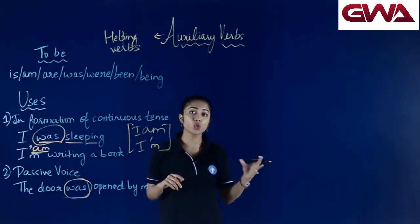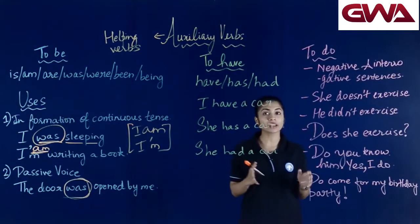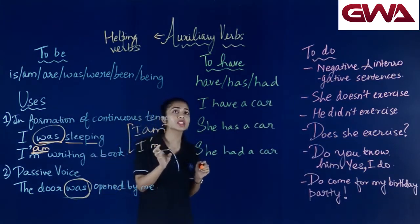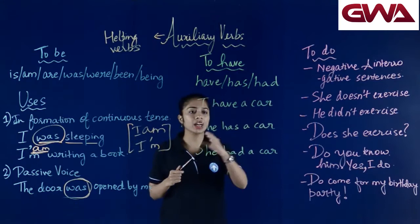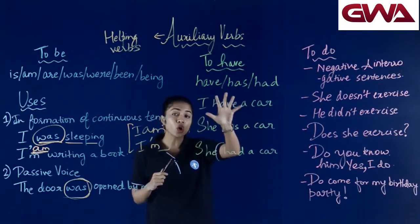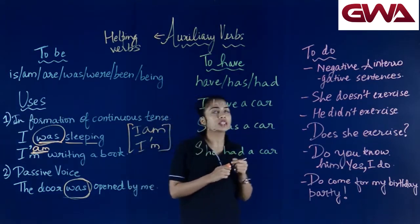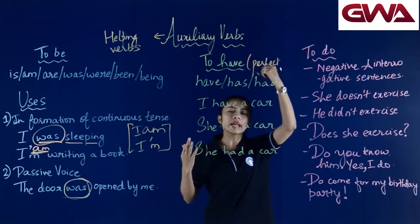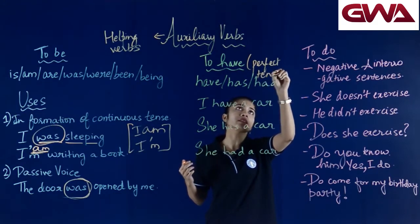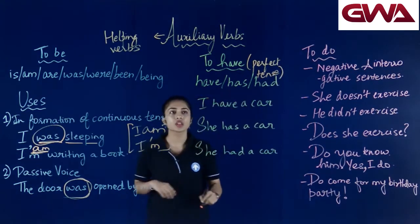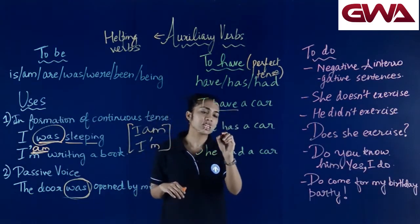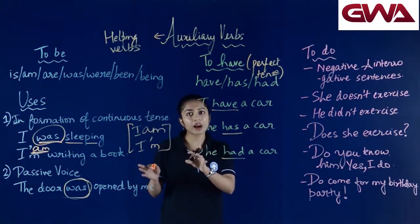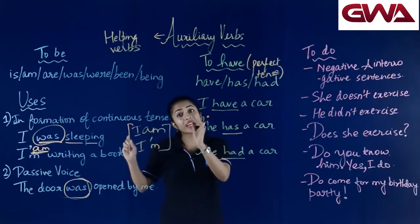आइए पढ़ते हैं to have और to do auxiliary verbs के बारे में। अगला category of auxiliary verb है to have verbs। To have verbs में आते हैं words have, has और had — I have a car, she has a car, and she had a car। To have auxiliary verbs का main use होता है जभी भी हम sentences perfect tense में construct करते हैं, उसमें to have verbs हमें help करते हैं।